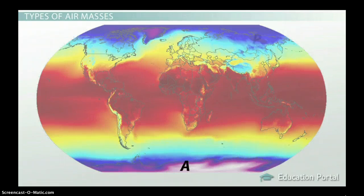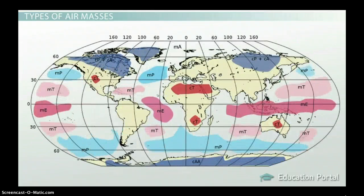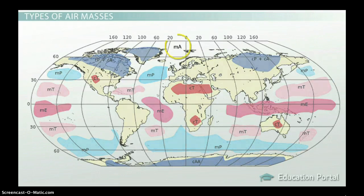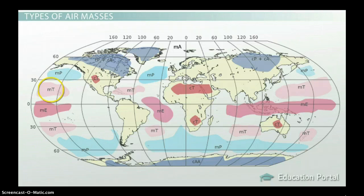So A stands for Arctic, P for polar, and T for tropical. Each source region can also be either continental or maritime, and to represent this we simply combine the category letters. This gives us six total types of air masses on Earth: maritime Arctic (MA), maritime polar (MP), maritime tropical (MT), continental Arctic (CA), continental polar (CP), and continental tropical (CT).